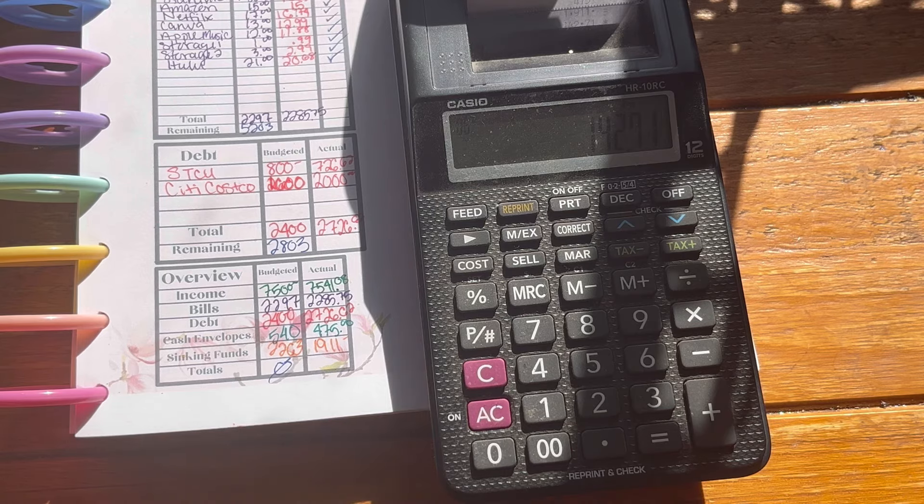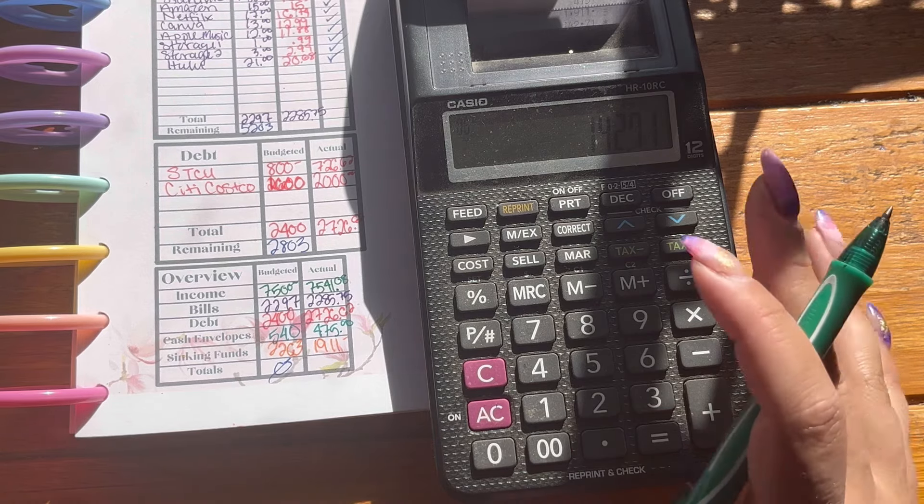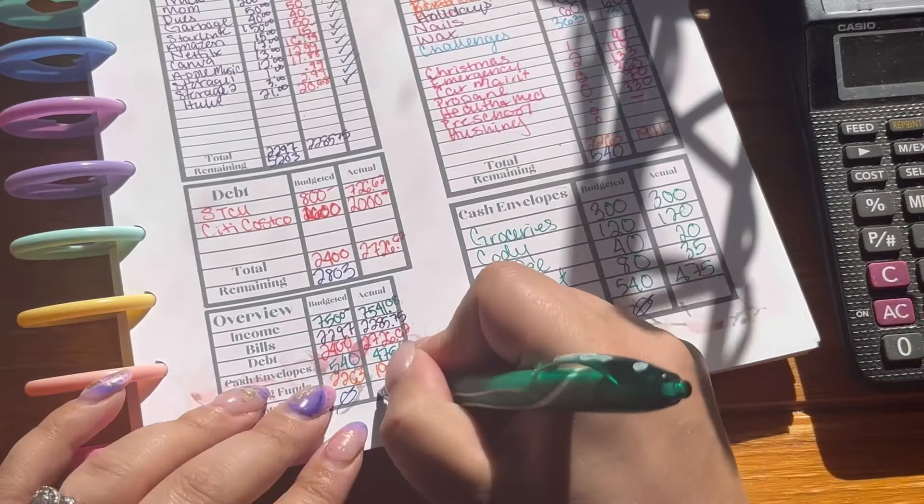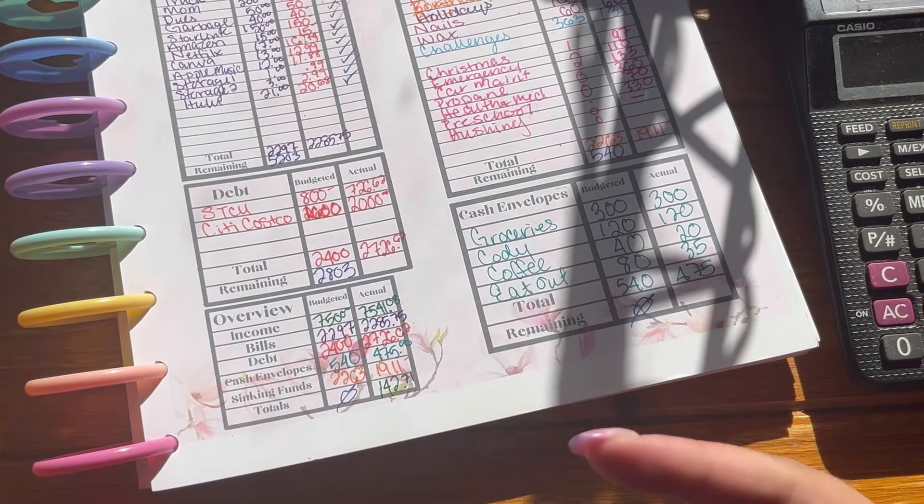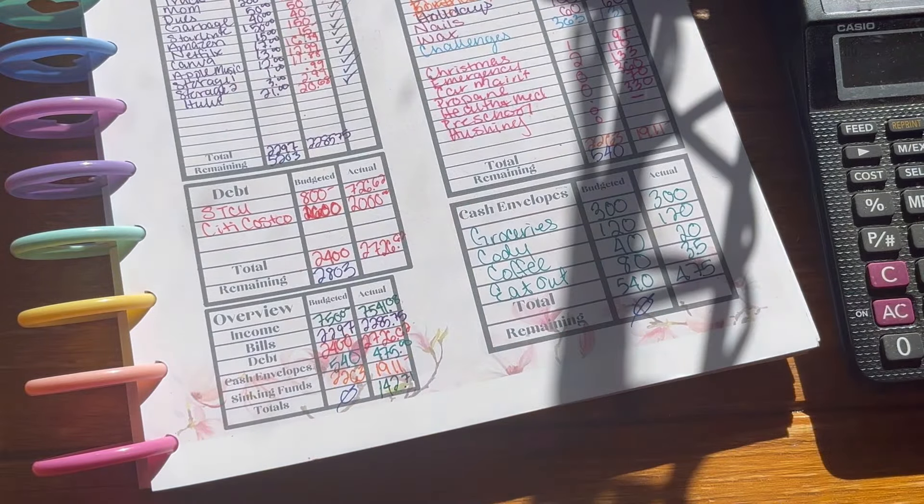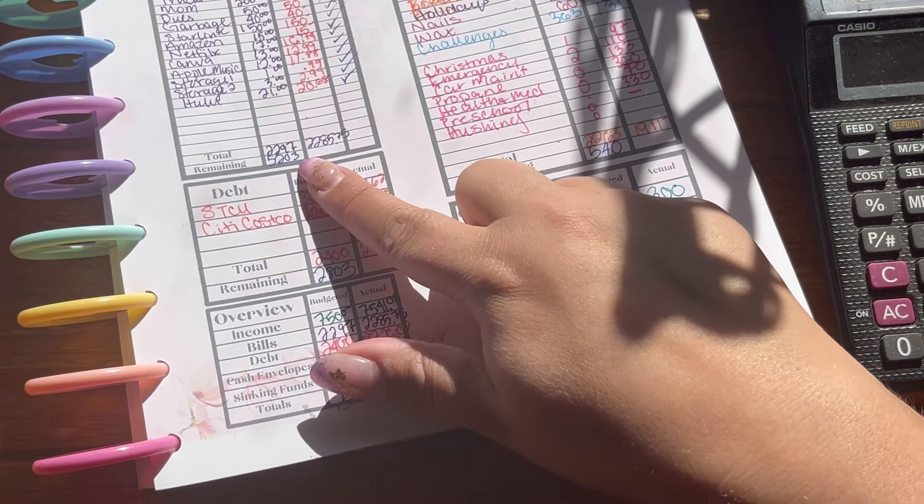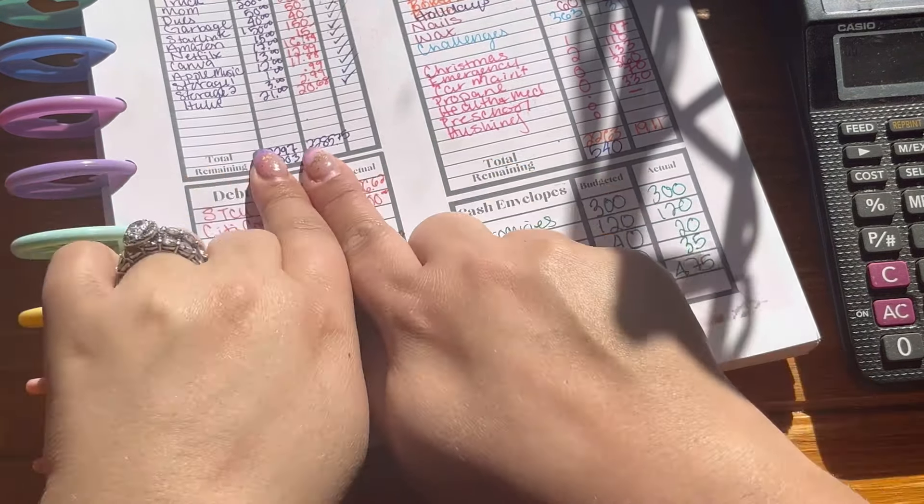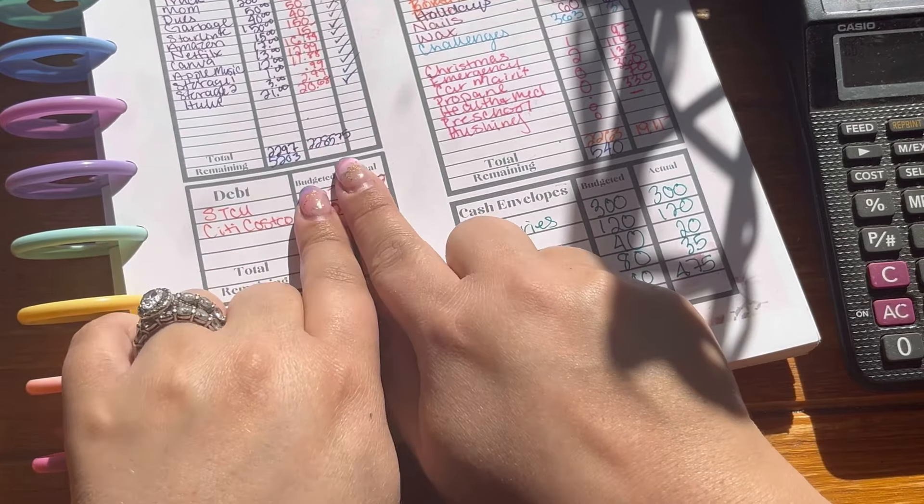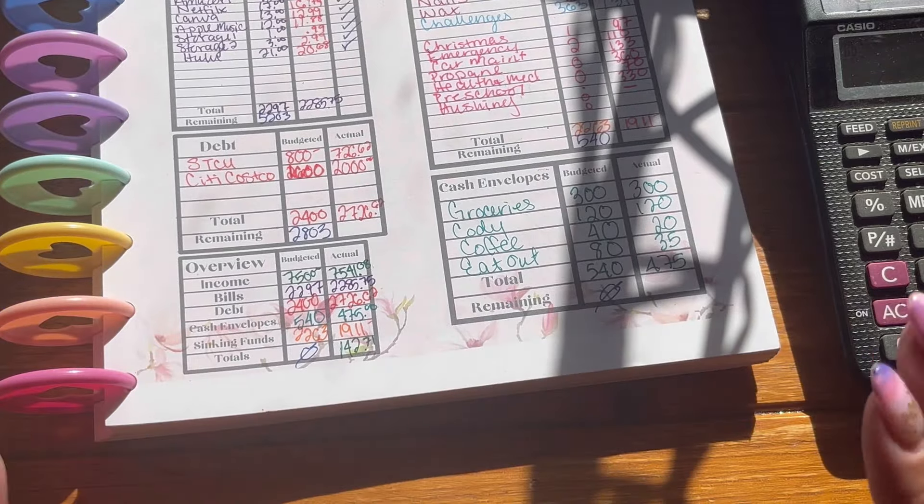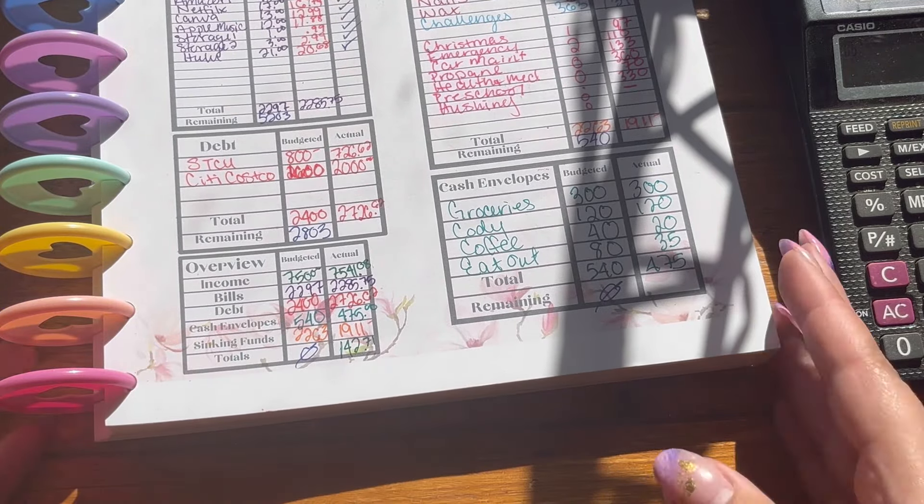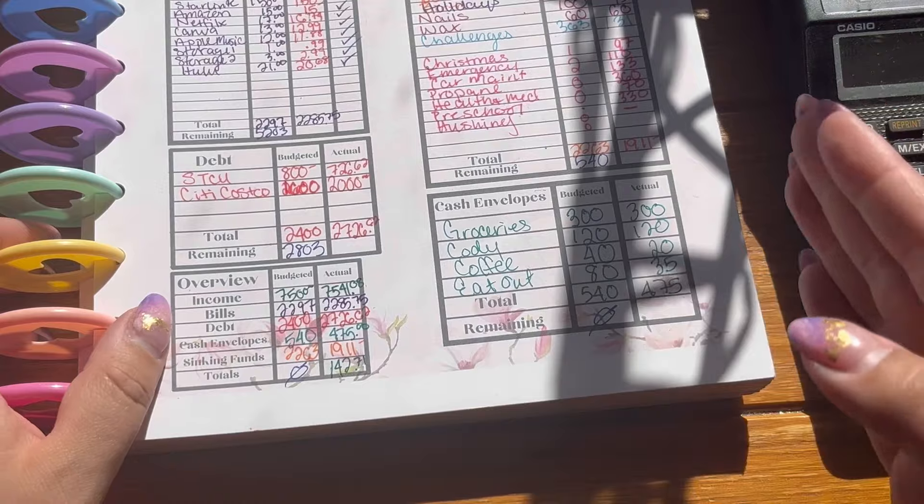All right, so we have 142.71 in the positive, which is correct because that is roughly what we carry in our buffer. Or, like, what we carry over because basically anything beyond we've been saving more for bills each month. So, we roll that just into our buffer or into our month ahead. So, that looks good. I love it. I like it. I like it a lot. We got lots to do. So, anyway, friends, that is our September closeout.